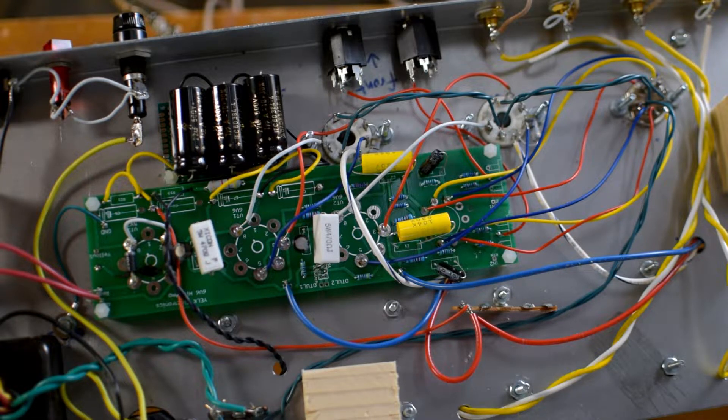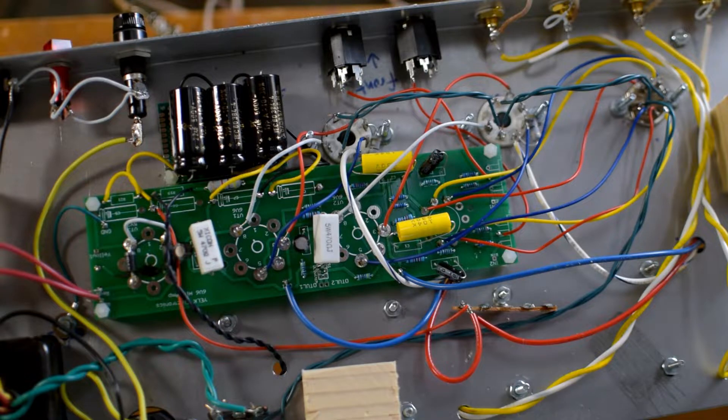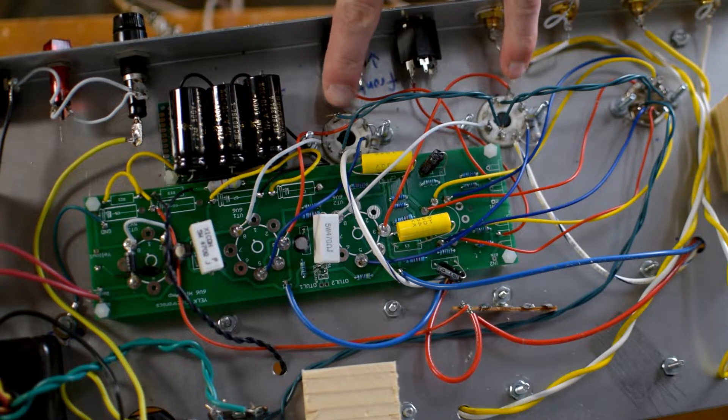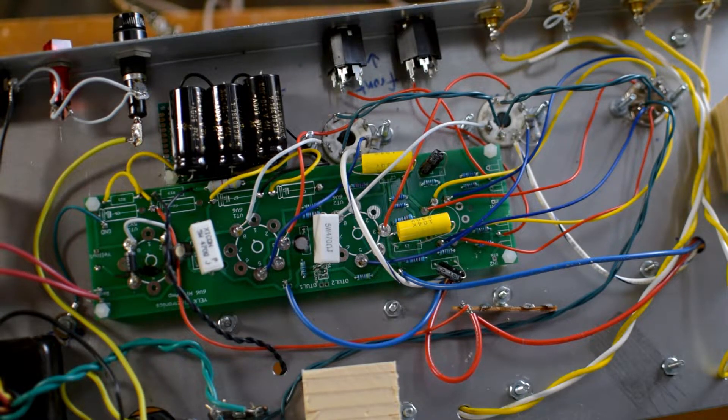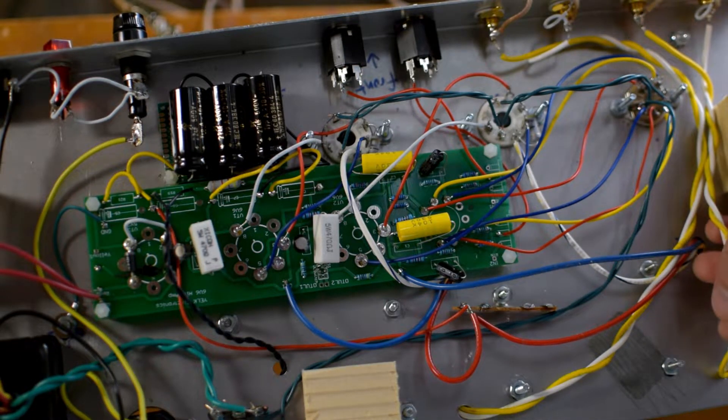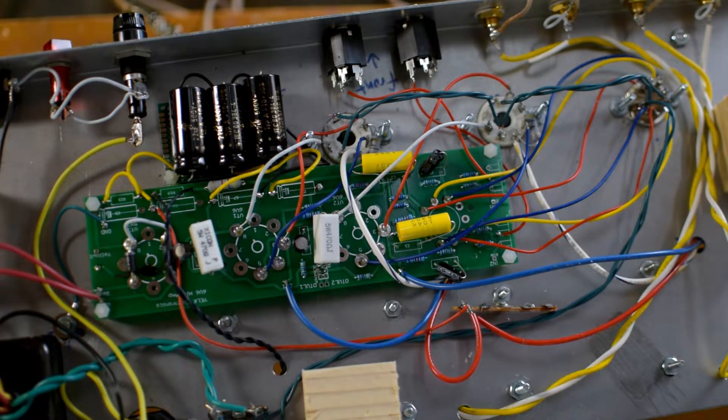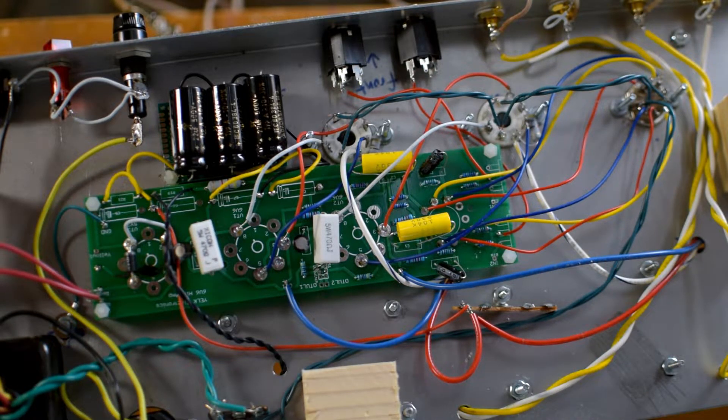I'm thinking I want to just kind of simplify some things. I need to review these 6V6s and how I have them wired with the output transformer, because right now I've got the ultra linear thing and I really don't understand that. So I think what I'm going to do is just rewire it as a pentode.